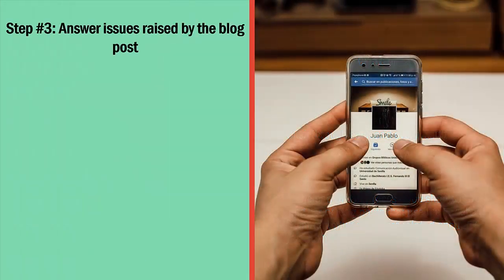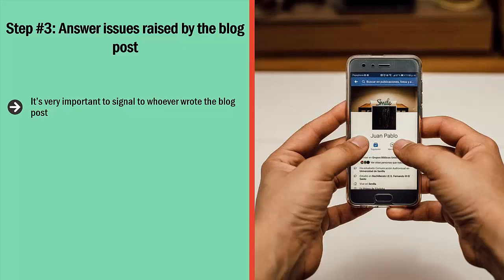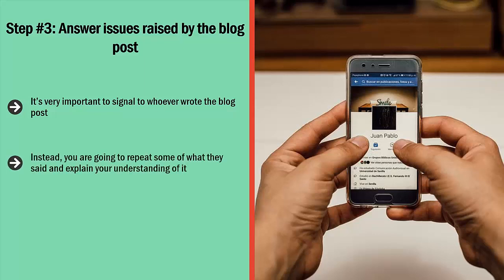Step number three: answer issues raised by the blog post. It's very important to signal to whoever wrote the blog post you're commenting on that you actually read their post. This means you're going to avoid posting 'hey good job' or 'I love this post' or other similar garbage. Instead, you're going to repeat some of what they said, explain your understanding of it, and then raise issues or questions — you may not agree, and you should say so.